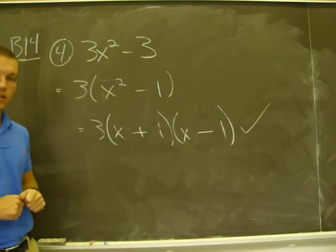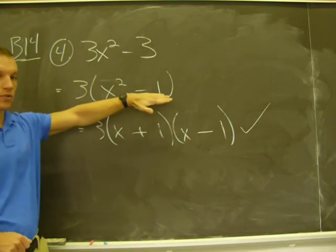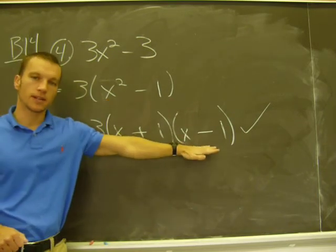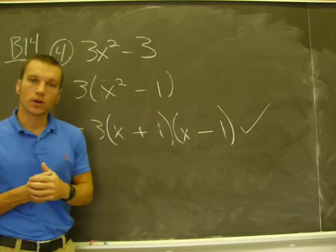Step one, factor out the greatest common factor. Step two, what else can you do with it? In this case, difference of two squares, factors like this, okay? And then I'm done. Alright? Number four, keep working. Remember, you've got to do all your homework in order to pass the course.